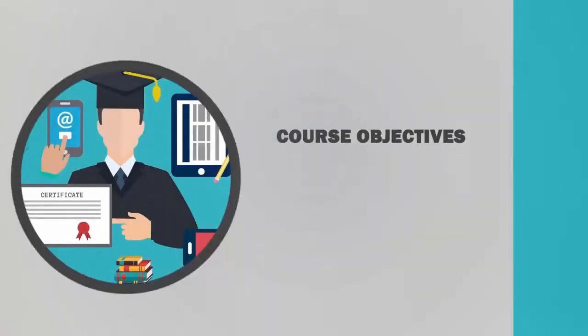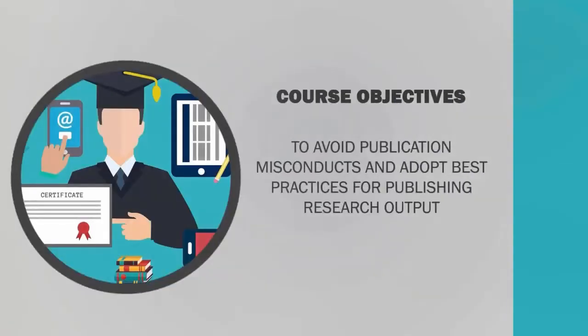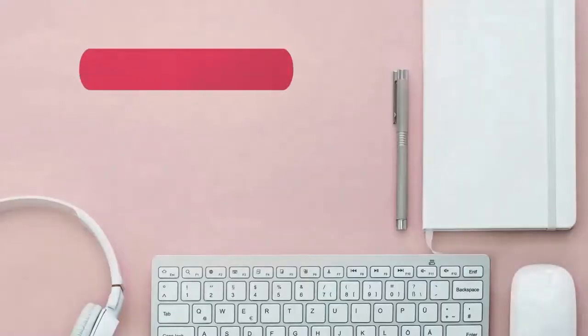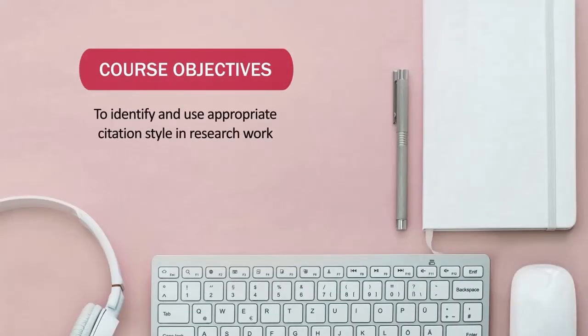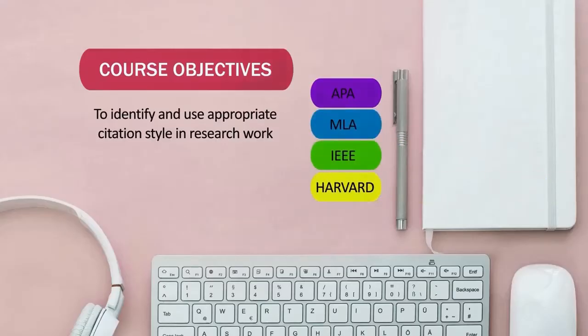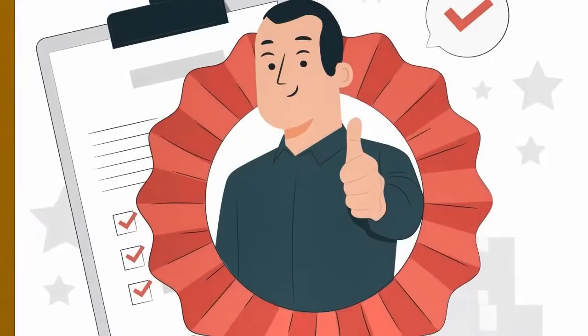This course will also help you avoid publication misconduct and adopt best practices for publishing your research output. Many researchers struggle to find an appropriate citation style, so the course will deal with different citation styles — such as APA, MLA, IEEE, Harvard, and others — so that you can identify and use the appropriate style for your work.